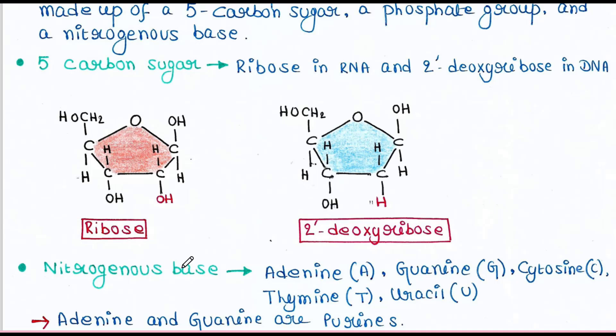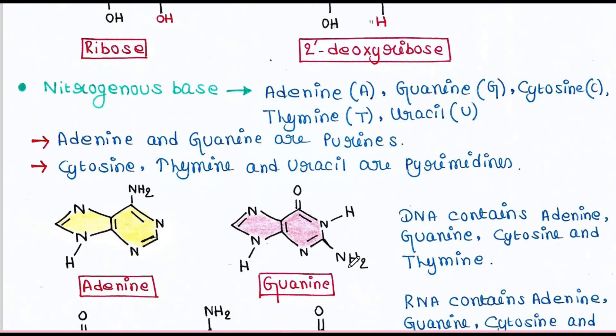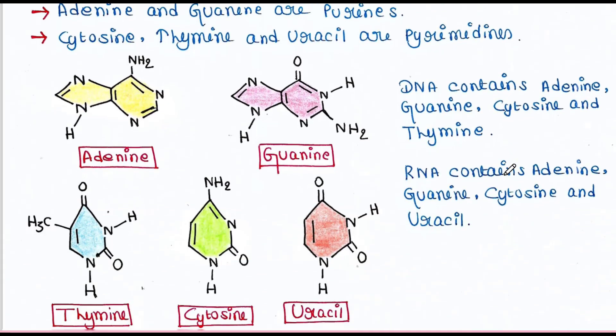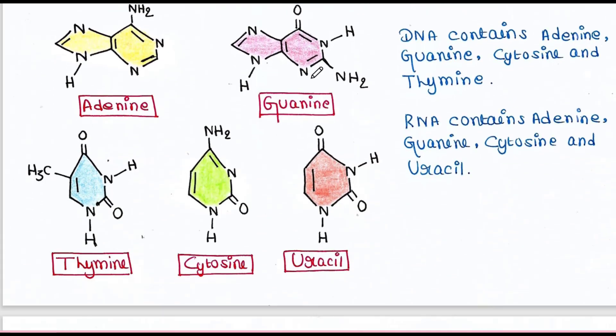Next, nitrogenous bases. So adenine, guanine, cytosine, thymine, uracil—these 5 are the nitrogenous bases. Adenine and guanine are basically purines, and cytosine and uracil are pyrimidines. Here are the structures. You can find the structures if you want.